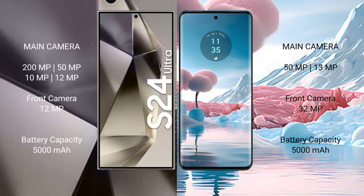Samsung Galaxy S24 Ultra features a quad rear camera setup: 200MP plus 50MP plus 10MP plus 12MP, and a front camera of 12MP. Motorola Edge 40 Neo features a dual rear camera setup: 50MP plus 13MP, and a front camera of 32MP.